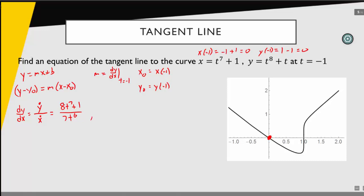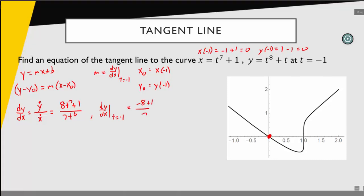Now what we really want is our slope at the point t equals negative 1. So let's plug in that specific t value. Looks like we have negative 8 plus 1 divided by 7. So looks like we have negative 7 over 7, looks like we have a slope of negative 1.